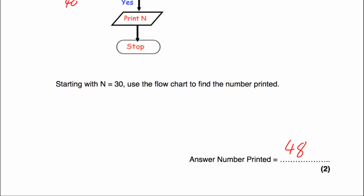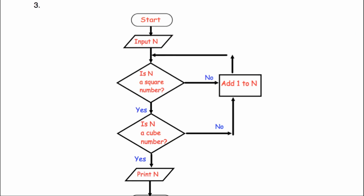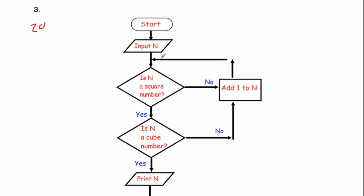Question 3. We input N equals 20. Is 20 a square number? No — add one: 21. Not a square number — add one: 22. Not a square number — add one: 23. Not a square — add one: 24. No — add one: 25. Is 25 a square number? Yes. Is it a cube number? No — add one: 26.